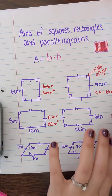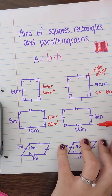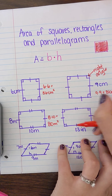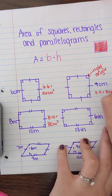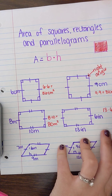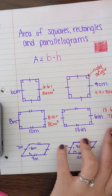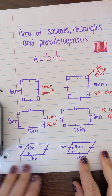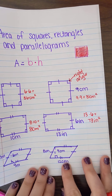Let's check how we did. Base times height — the right angle connects our base to our height. So 13 times 6: we should have come up with 78 inches squared.